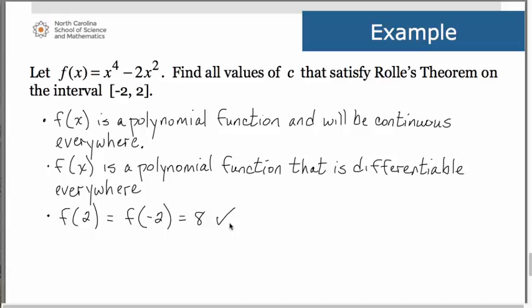The three conditions for Rolle's theorem are therefore met, and we can go ahead and find the values of c that satisfy Rolle's theorem on the interval [-2, 2]. So according to Rolle's theorem, there should be a c value in that open interval (-2, 2) so that f'(c) is going to equal 0. So let's go ahead and find the derivative.